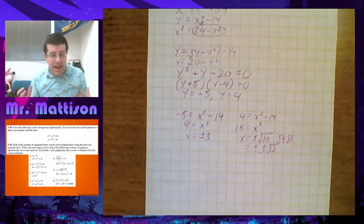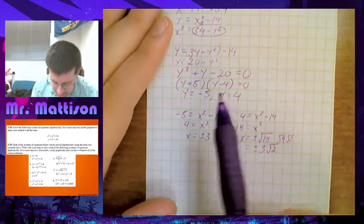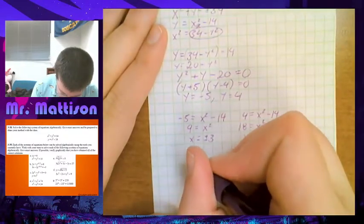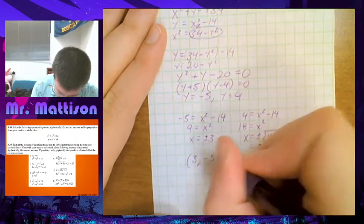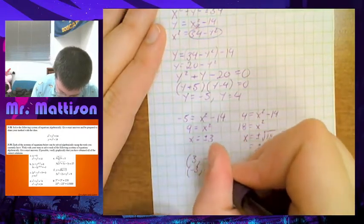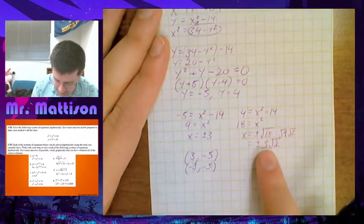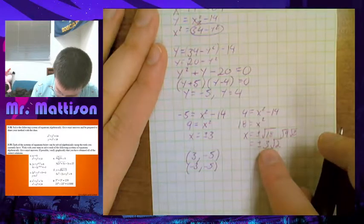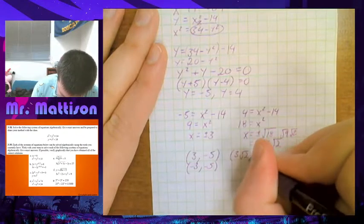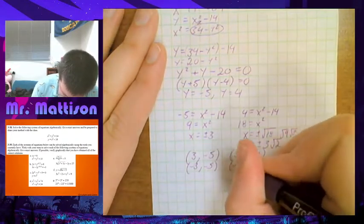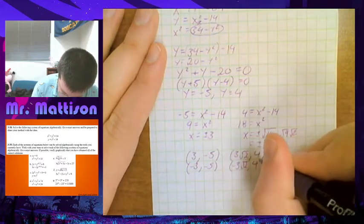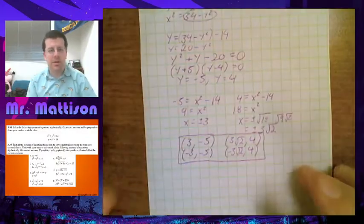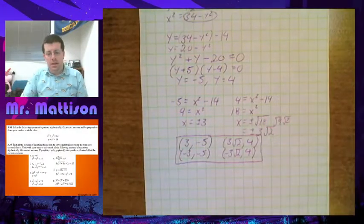So my answers as ordered pairs: from y = −5, I get (3, −5) and (−3, −5). From y = 4, I get (3√2, 4) and (−3√2, 4). So there are four solutions for where those curves intersect.